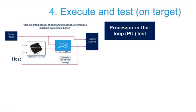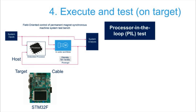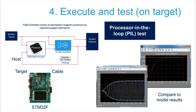We can do this with processor-in-the-loop testing. The optimized STM32 C code component is generated, compiled and linked into an object file, then downloaded via JTAG onto the target board. A communication link between the target and the Simulink model is established, so part of the code is still running on the host while the control algorithm runs on the target. The same stimuli and test cases used in simulation can now be used with the real STM32 in the loop, and if code generation is correct we expect to get the same results.